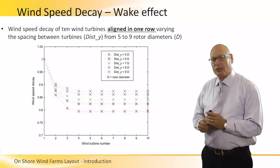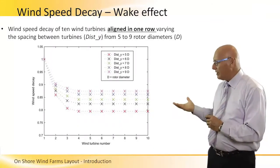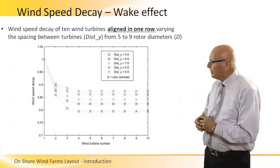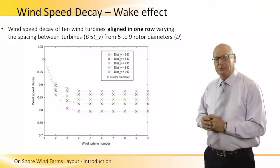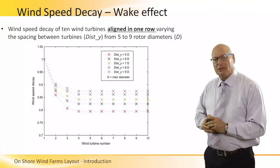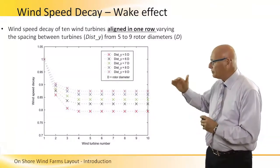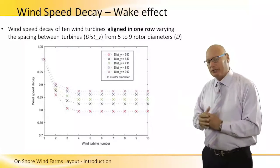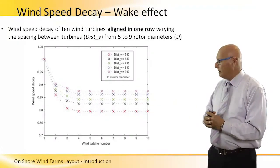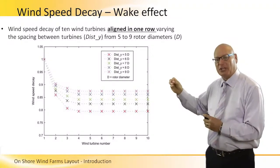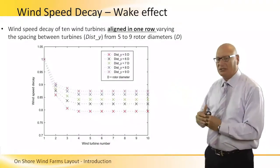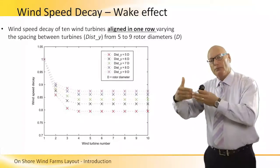This graph shows something very interesting. The horizontal axis is the number of wind turbines in a farm, and the vertical axis is the wind speed decay — the percentage of decay in wind speed as we increase the number of turbines and as we increase or decrease the distance between each turbine. We see five different examples: when the distance is five times the diameter compared to a distance of nine diameters, there will be a difference in the wind speed decay from the front row compared to the back rows.